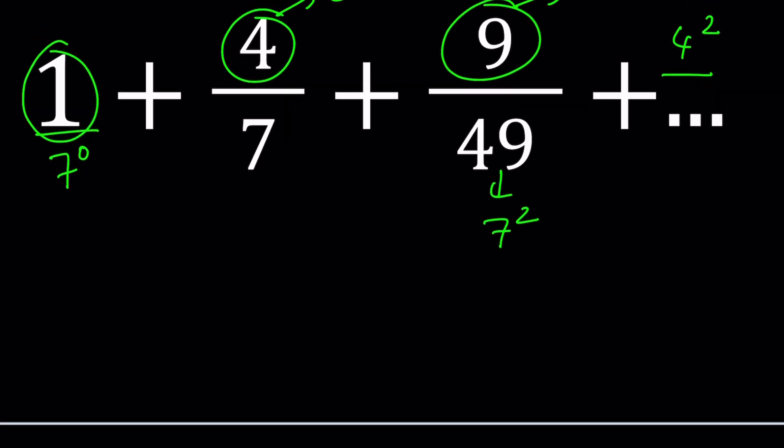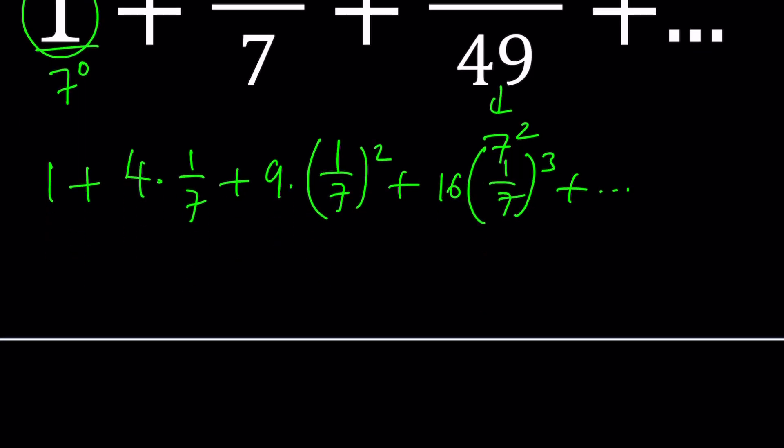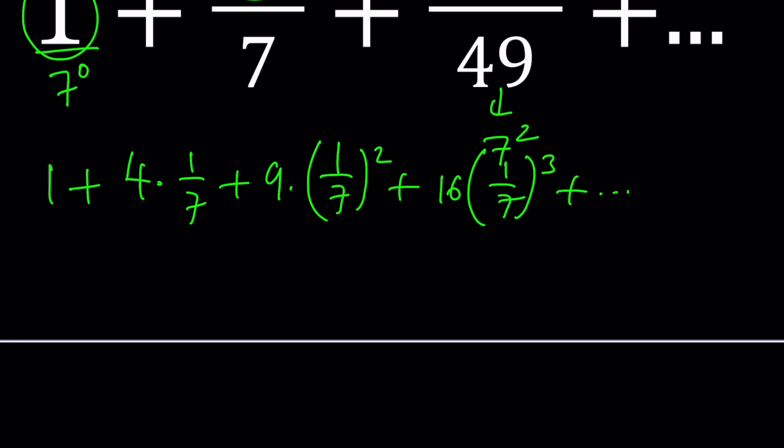I want to write this as follows: 1 plus 4 times 1 over 7 plus 9 times 1 over 7 squared. And of course the next term is going to be 16 times 1 over 7 cubed, and so on and so forth. 1 over 7 is repeating. We can call it something. How about R?